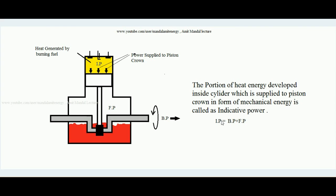This is the energy balance of an engine: indicative power available over the piston top equals friction power plus brake power. For example, if 100 joules of energy is available over the piston top, 20 joules may be lost to overcome the various frictions inside the cylinder, and ultimately 80 units of power would be available over the crankshaft outside the engine.